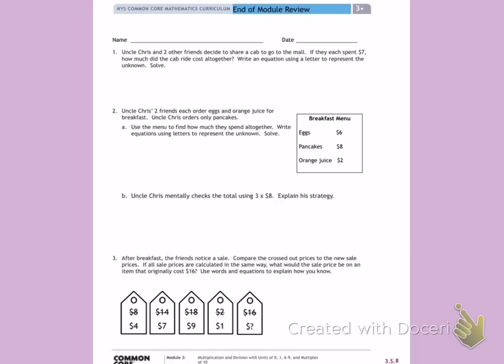So I know that I have Uncle Chris and two friends. So that gives me a total of three people. Each of those people is paying $7 for the cab ride. I need to figure out how much they spent on the ride altogether. To do this, I need to write an equation, use a letter, and solve. So I have three friends going in a cab. They are each paying $7.